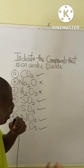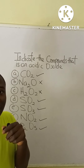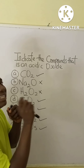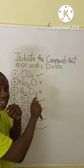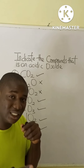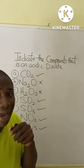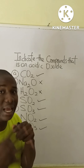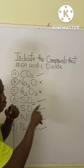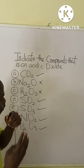For option C, H₂O₂ is not an acidic oxide. Even though hydrogen is generally a non-metal, this compound is not an acidic oxide because the oxidation state of oxygen in H₂O₂ is minus one instead of the normal minus two. When the oxidation state of oxygen is minus one, the compound is called a peroxide, not an acidic oxide.